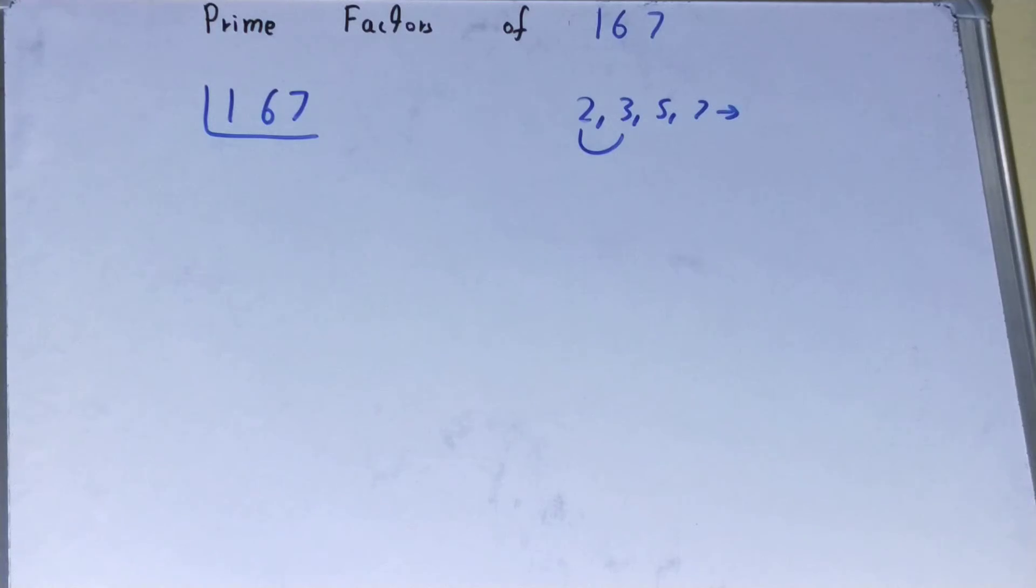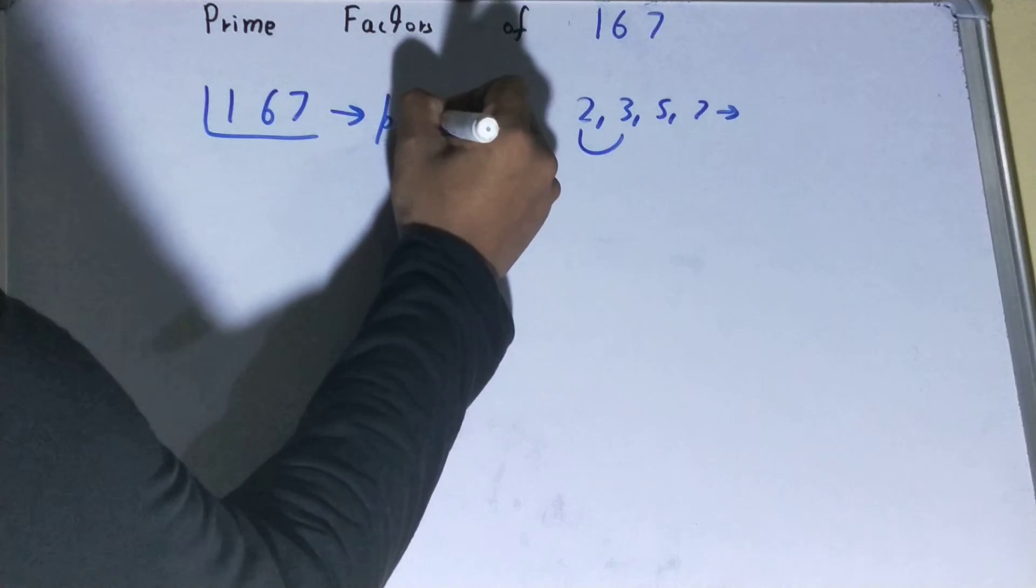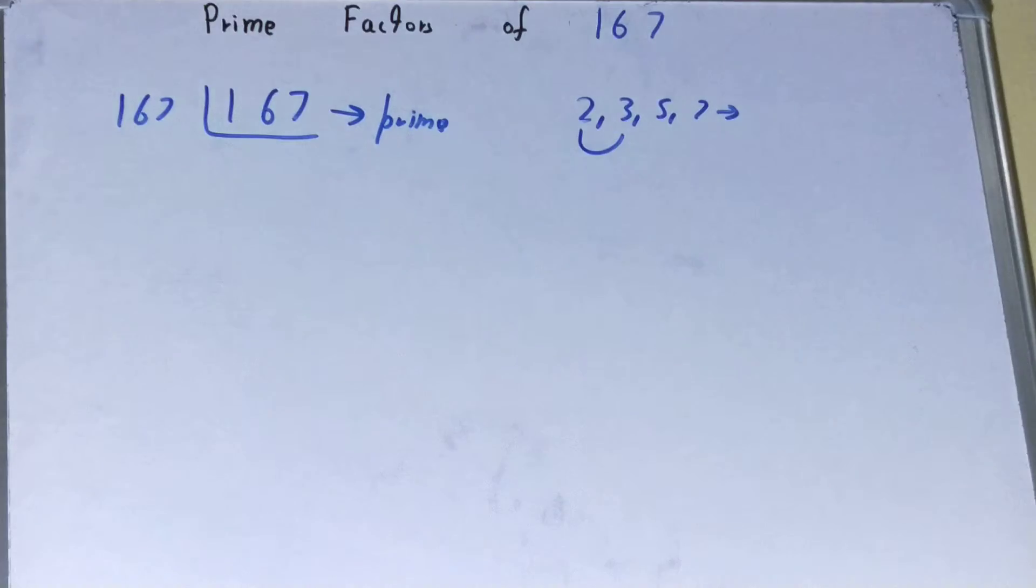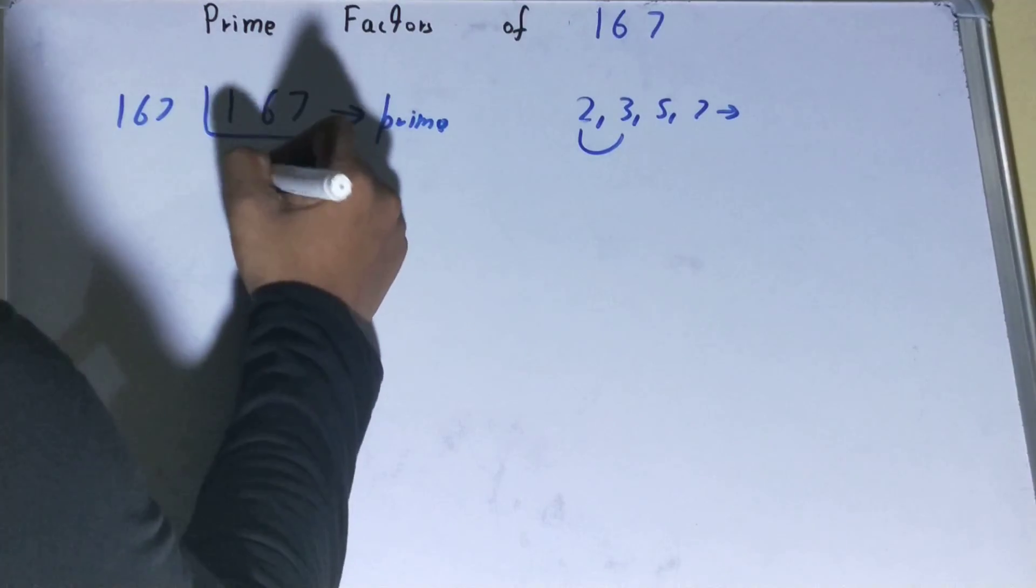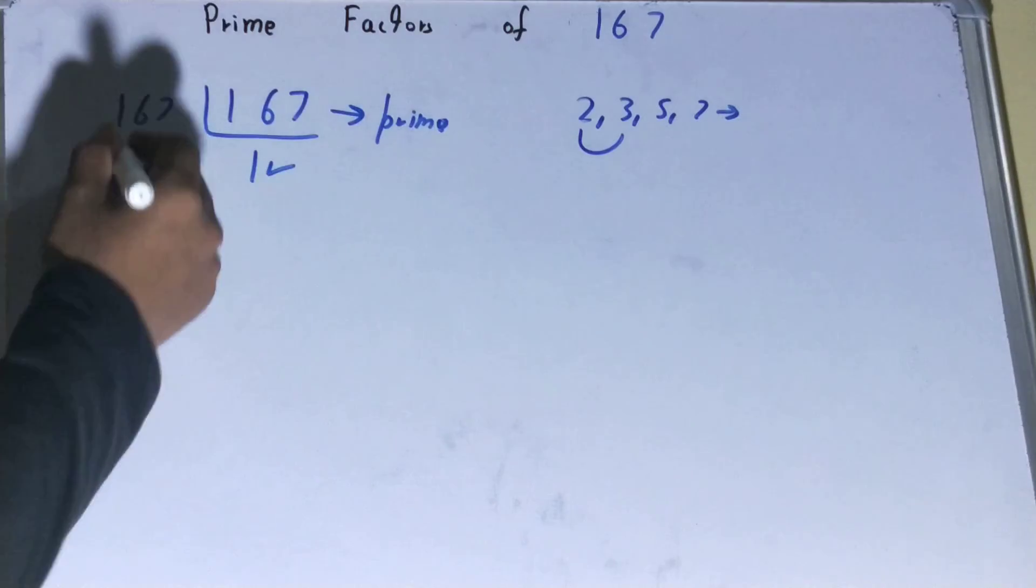Why so? Because 167 is prime itself, and because it is a prime number, so it is divisible by itself only. And when you will do so, you will get the value as one. Once you get the value as one, the work is done, and whatever you have on the left-hand side will be the set of prime factors.